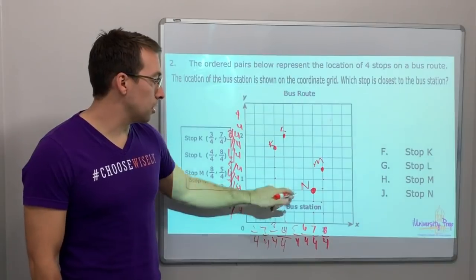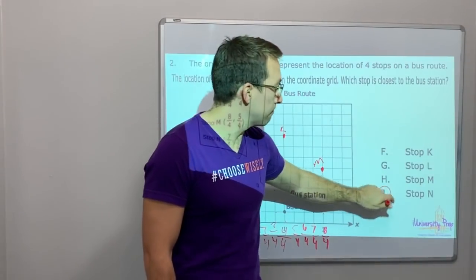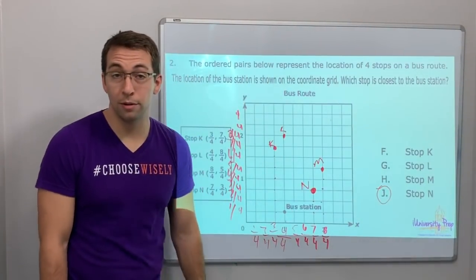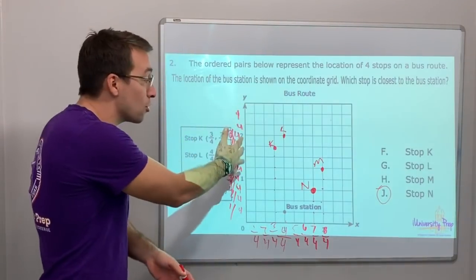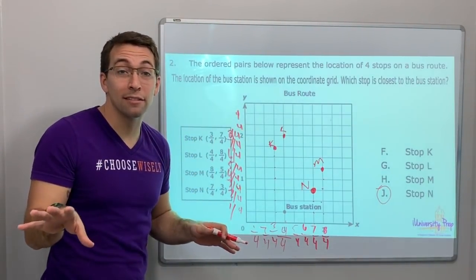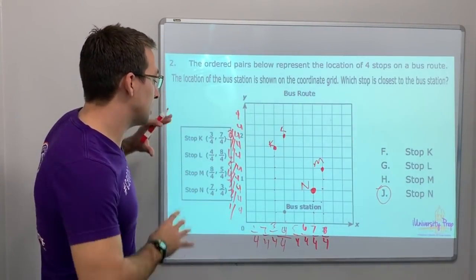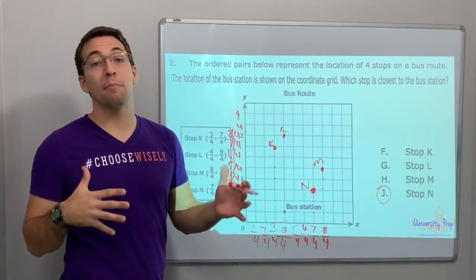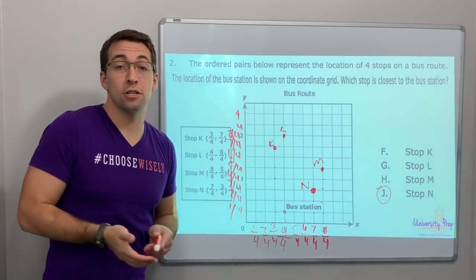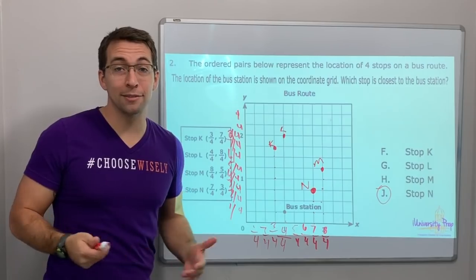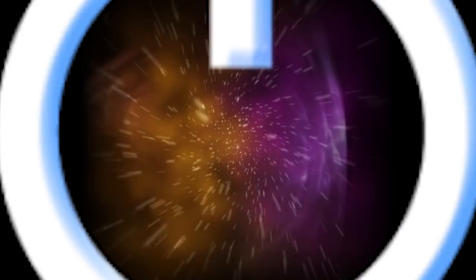Which is closest? N is closest. Fractions and the coordinate plane — don't freak out. So guys, we'll stop at this video here and pick up in the next video on question number three. Thanks so much for watching. See you next time. Bye bye.